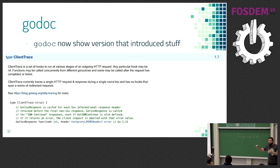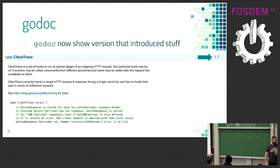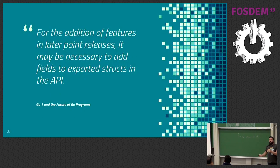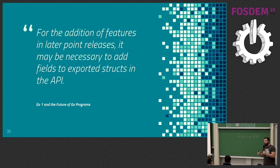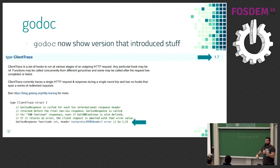Something cool: in godoc, the HTTP server binary, you will now be able to see in what version something was added to the standard library. For example, ClientTrace was added in 1.7, and a field in that struct was added in Go 1.11. This is compatible with Go's backwards compatibility — which means when declaring structs, you should always use field names. Otherwise, if a new field is added in a newer version, your positional code will break.